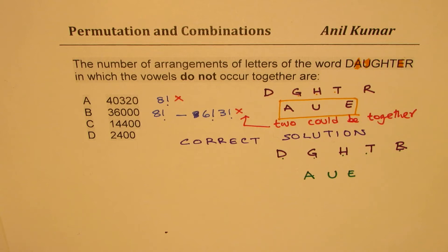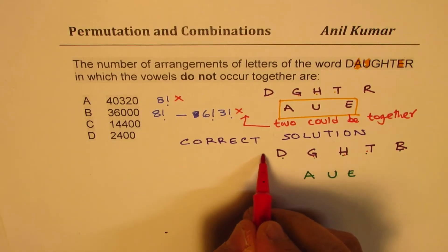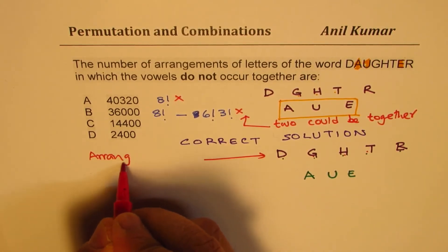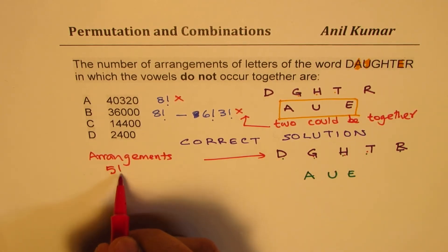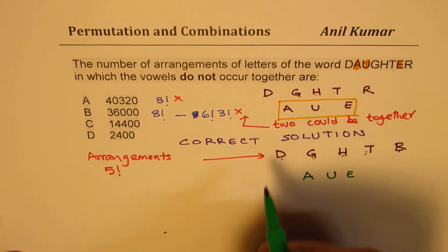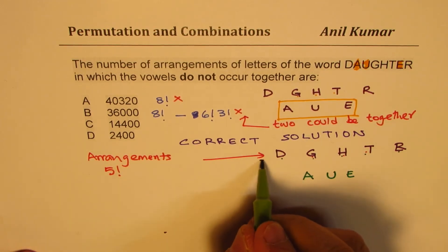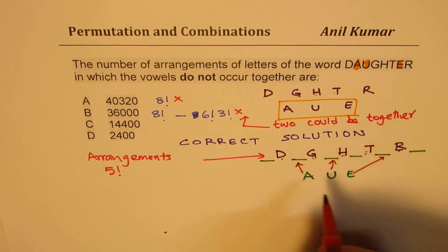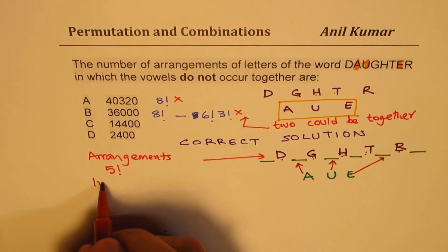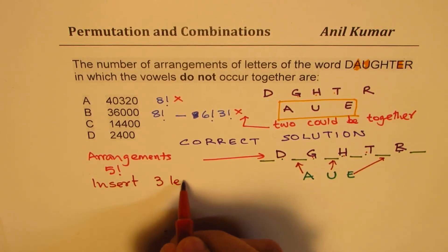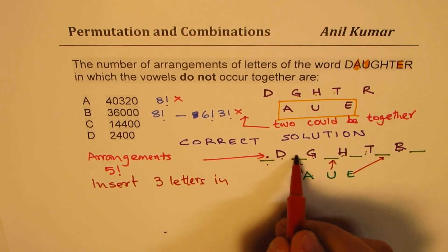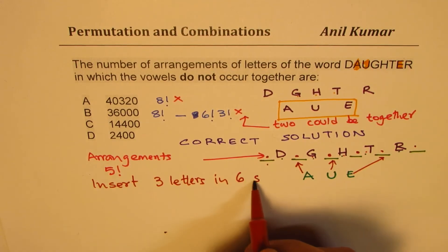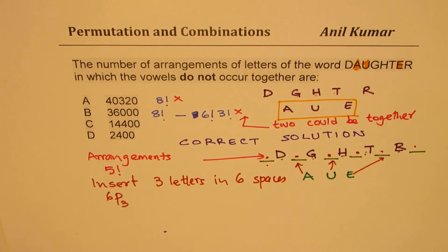So the solution for this question is the number of ways in which these 5 letters can be arranged, so their arrangements will be 5 factorial. And now we'll look for inserting A, U, E in the spaces in between. So if I insert A here, U there, and E somewhere there, they are ensured to be separate. None of them will be together. Now, how many ways are there to insert 3 letters in 6 spaces? So that is 6P3.